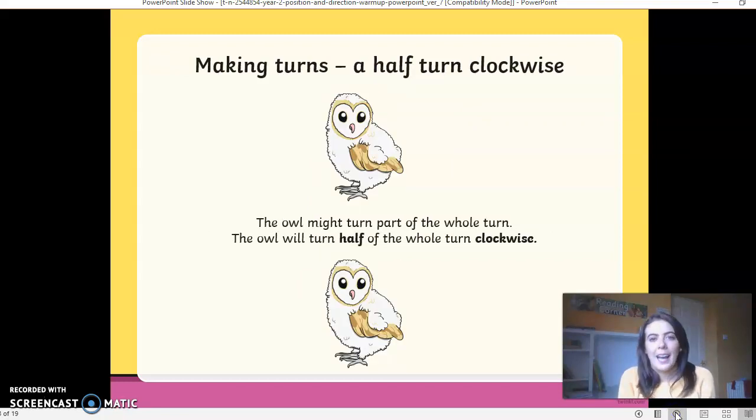Making a half turn. Think about it. If the kite and the teddy bear turned a quarter, where, what position do you think the owl is going to turn? Okay. So the owl might turn part of the whole turn. The owl will turn half of the whole turn. So if he's standing upright, what way do you think he's going to end up?